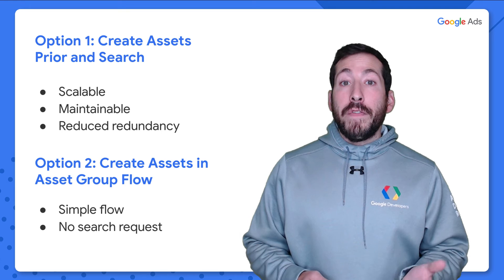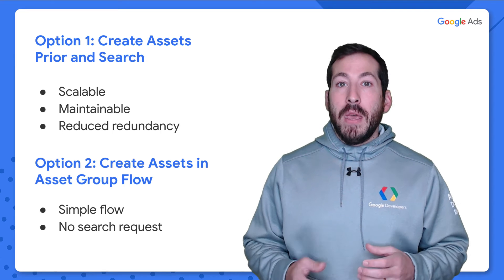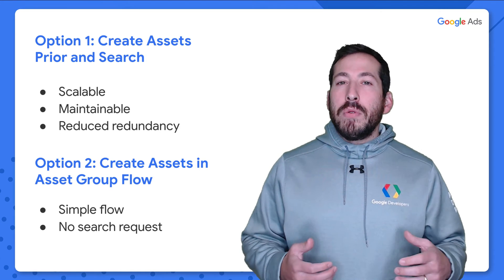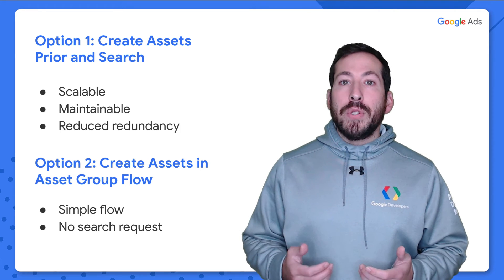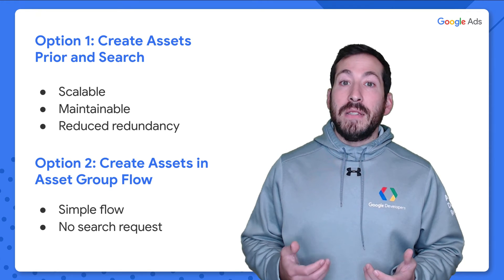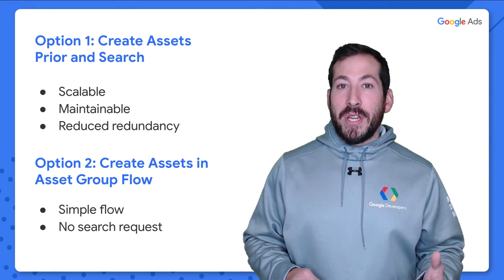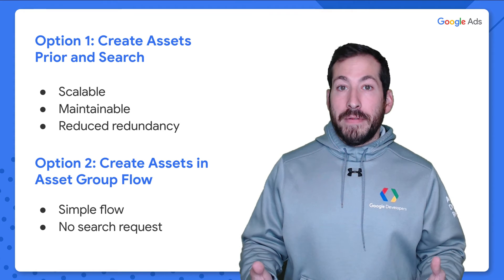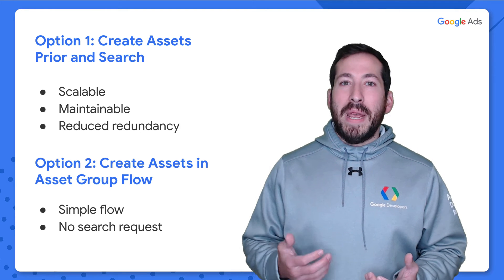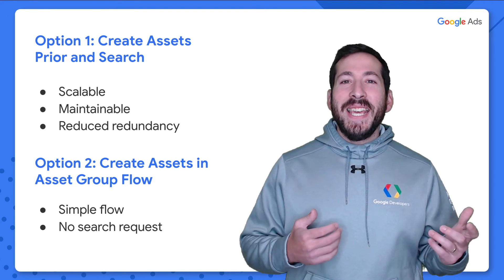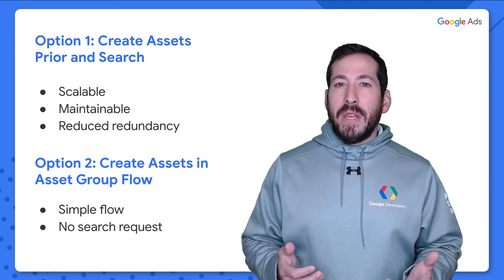When it comes to creating assets and attaching them to your asset groups, you have two options. The first is the one we've been going through throughout this series: you create the assets ahead of time in a separate request — this is the Google Ads library concept. When you take this approach, you have to issue a search request to get the resource names of the assets you want to include in a given asset group. The other option is to include the asset creation in the bulk mutate request itself. The first approach has advantages, particularly as it relates to code maintainability and scalability — handling asset management separately, perhaps in a microservice, helps keep things manageable.